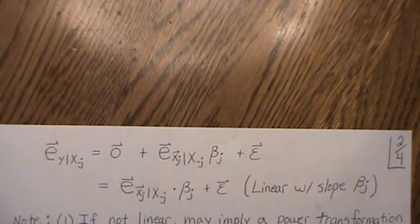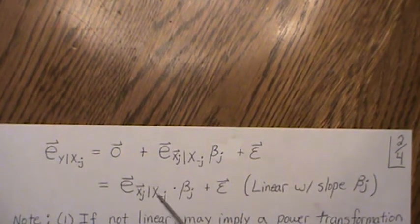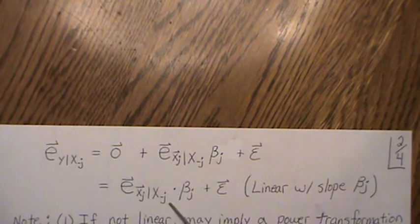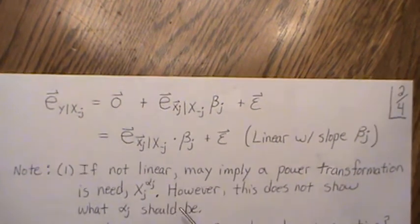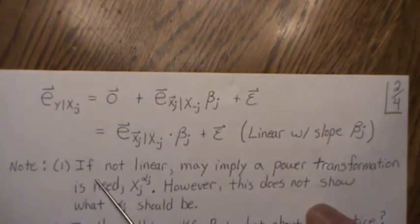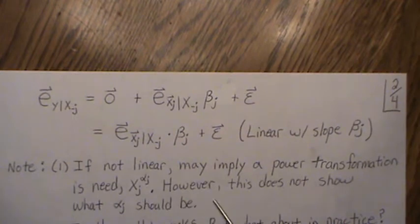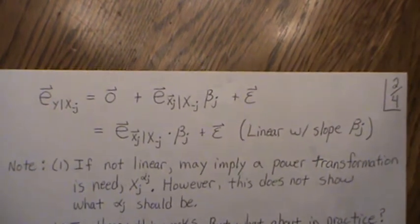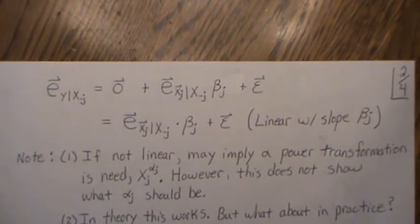When we conduct this plot, if it's not linear through the origin with slope beta j, something is wrong. Sometimes it may start to curve, which says xj should have a power transform — maybe squared, square rooted, or cubed. If the plot is not linear, it may imply a power transformation on the jth component is needed. However, these plots don't really show us what that power transformation should be, just that one is needed.